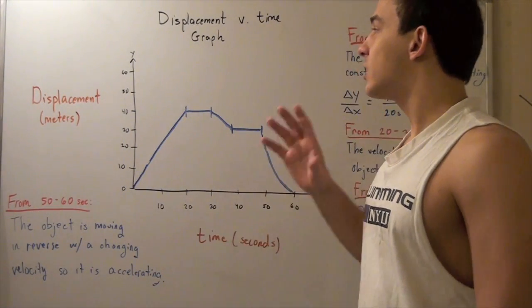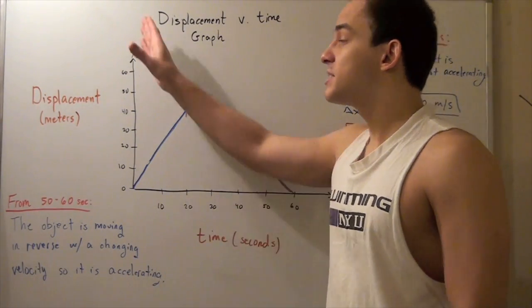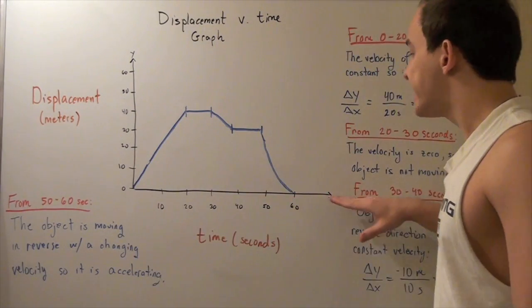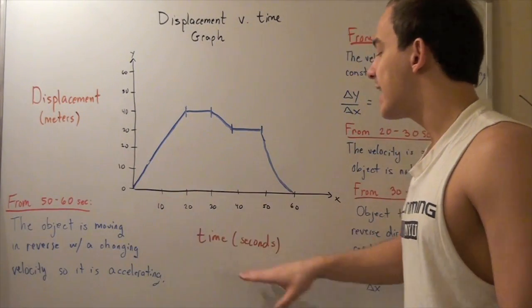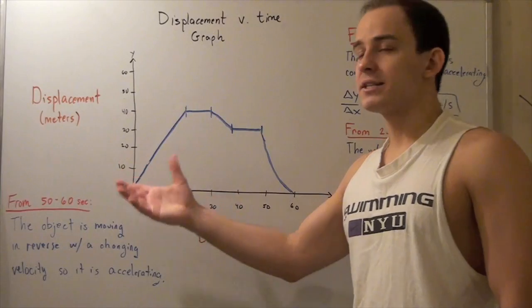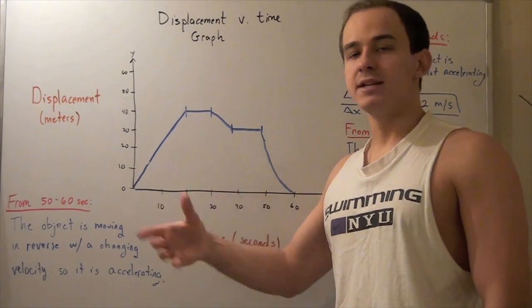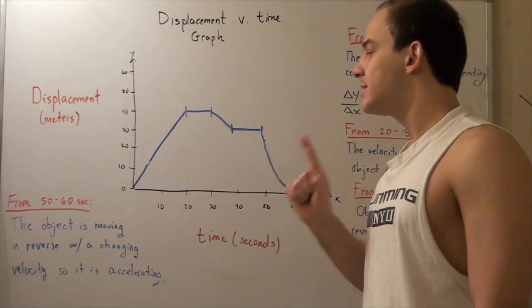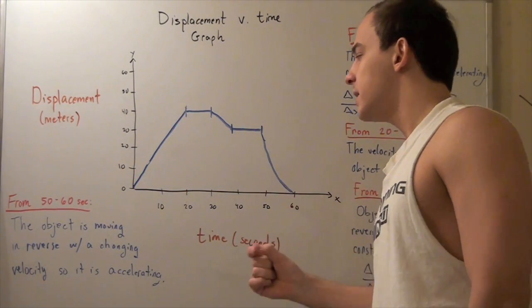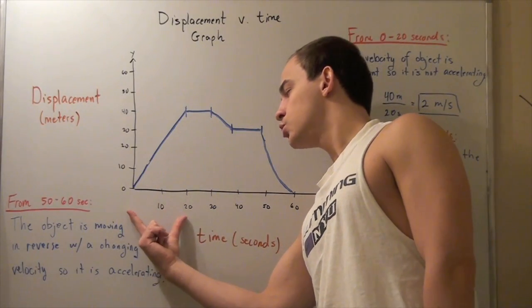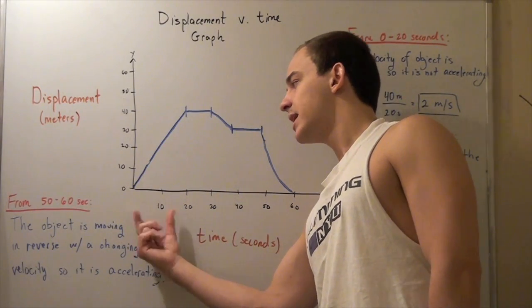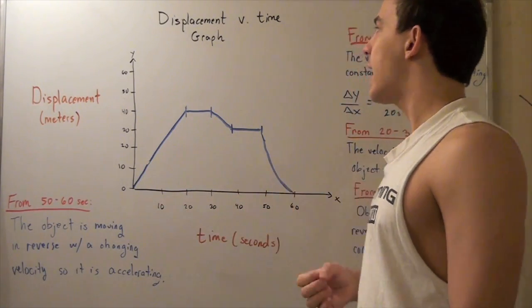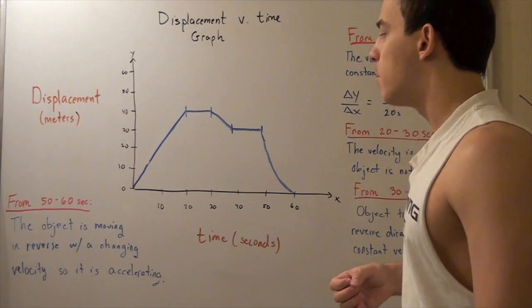Let's look at the graph of displacement in meters versus time in seconds that it took our object to displace some given amount of meters, and let's look at the period from zero seconds to twenty seconds to see what the curve can tell us about our object's motion.